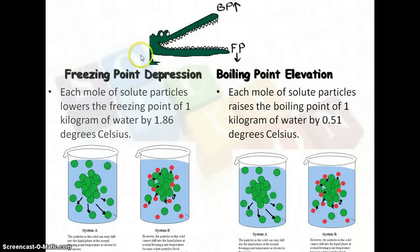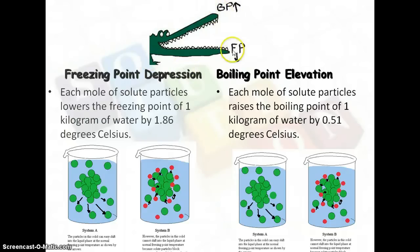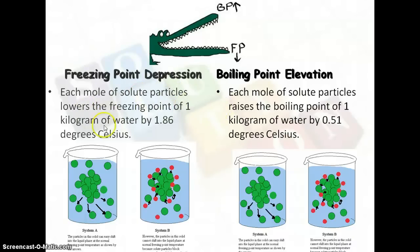Here you see a little more information about freezing point and boiling point. There's an animation at the top — remember that B comes before F, so boiling point goes up, it increases, and the freezing point goes down, it decreases. Each mole of solute particle is going to lower your freezing point of 1 kilogram of water by 1.86 degrees Celsius.